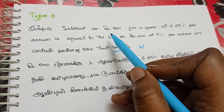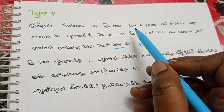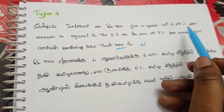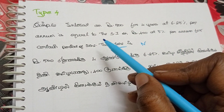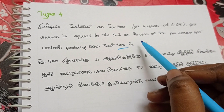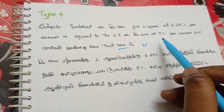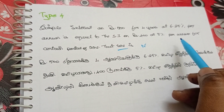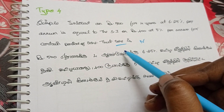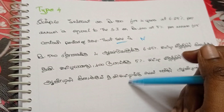Simple interest on Rs.500 for 4 years at 6.25% per annum is equal to simple interest on Rs.400 at 5% per annum for a certain period of time. Find the time period.